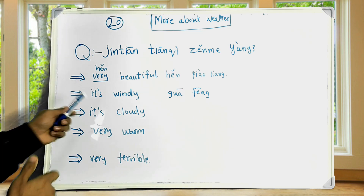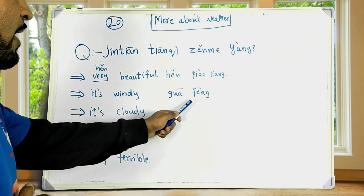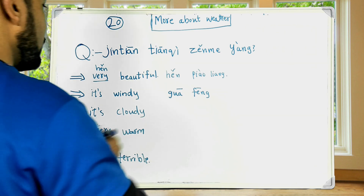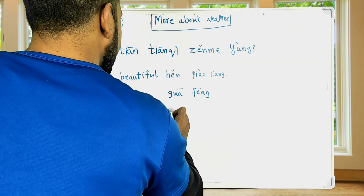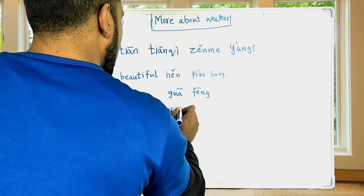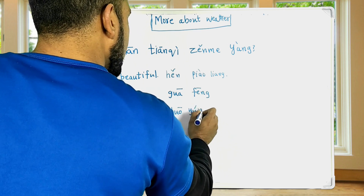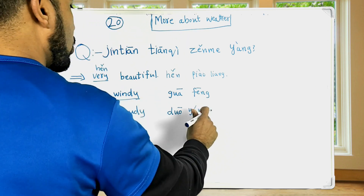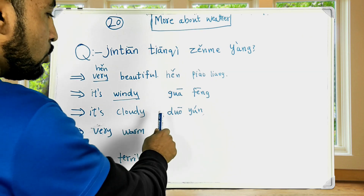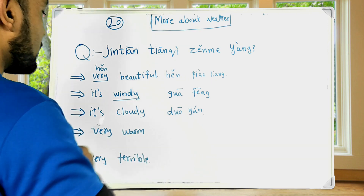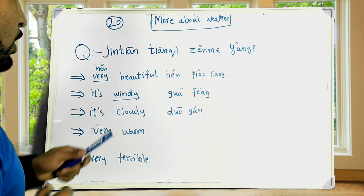How's the weather today? It's windy. How's the weather today? It's cloudy — 多云.